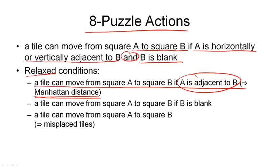The second one is, if we drop the first part of this definition, so that the adjacency condition is dropped, then we end up with a heuristic that the tile can move from A to B if B is blank.